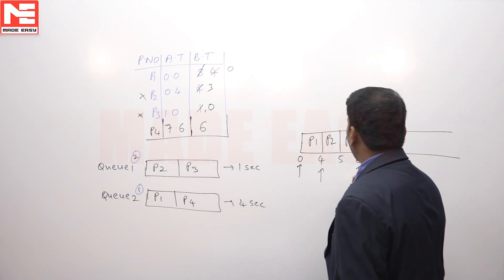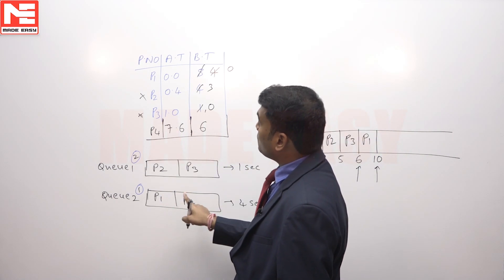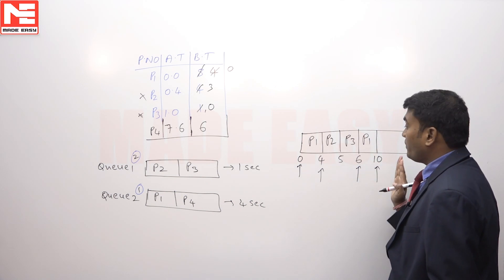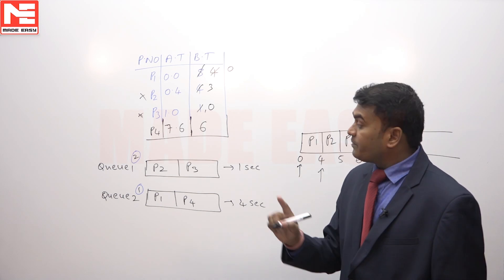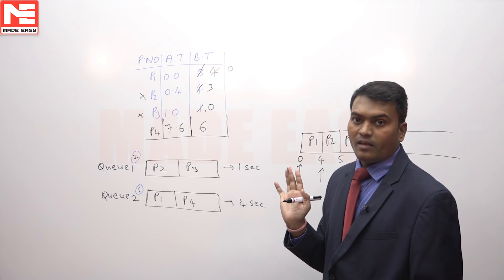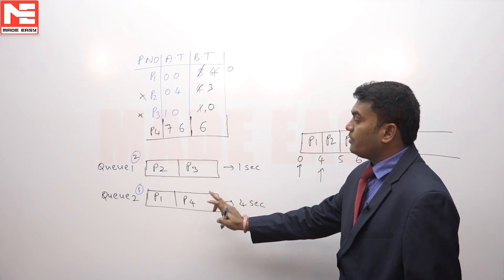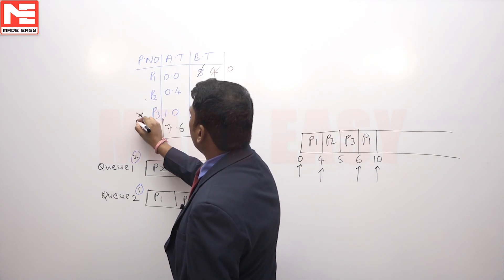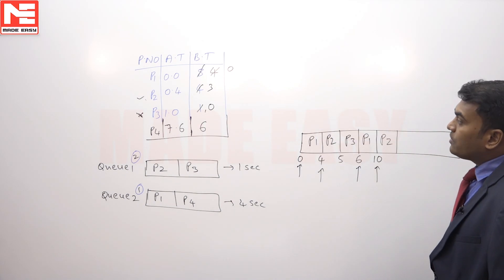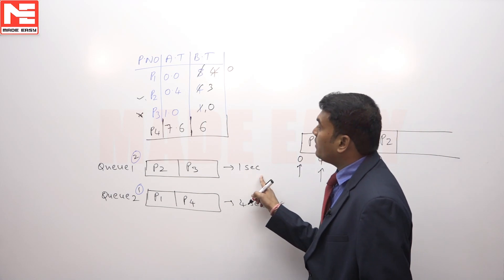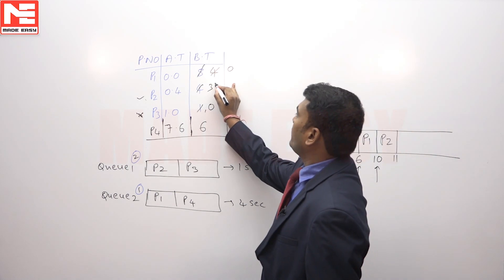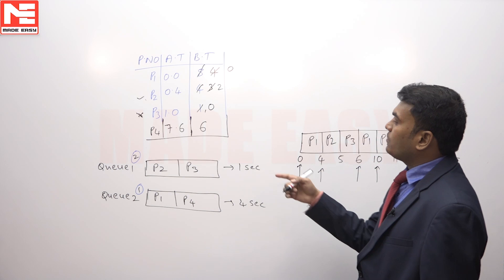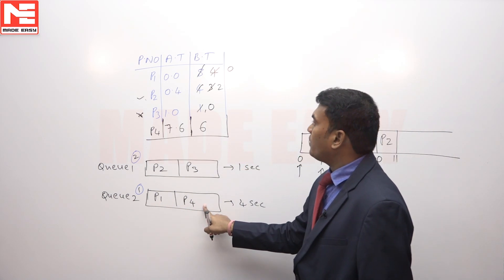At time 10, P4 is available, but we already executed one process from Q2 (P1), so we cannot take P4 now — the condition allows only 1 process from Q2 per cycle. From Q1, only P2 is available (P3 already completed). We execute P2 for 1 unit; time reaches 11, remaining for P2 is 2. We can execute one more Q1 process, but none is available, so we move to Q2.